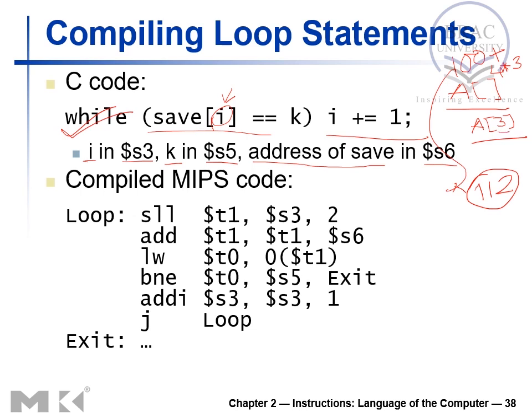This calculation applies only when the index is in integer form. In our example, the index is in variable form — it is not an integer. But it is still possible to generate MIPS code for this kind of variable-indexed array access. To guide you through this, assume for a moment that the instruction is something like save[3] = k instead.